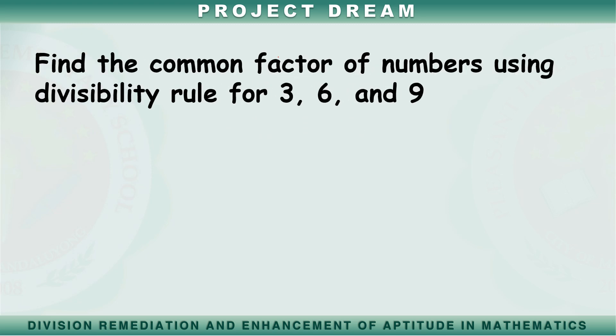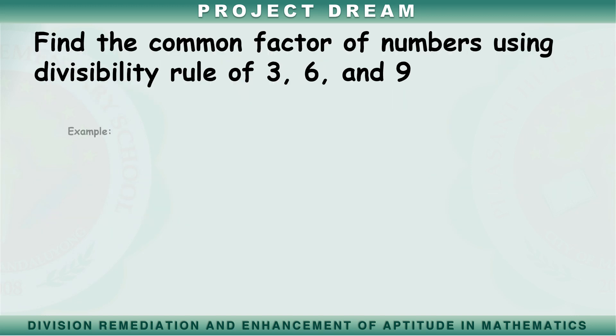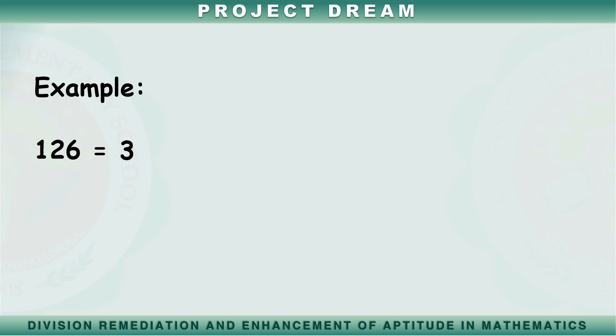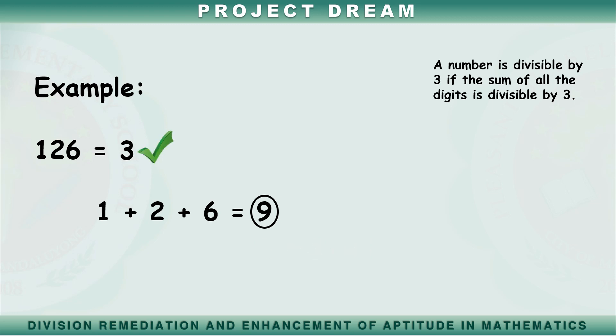We can now find common factors of numbers using the divisibility rules for 3, 6, and 9. What is a common factor? A common factor is a number that is a factor of two different numbers. Let's have an example: 126 and 144. Is 3 a factor of 126? Let's find out using the divisibility rule for 3: 1 plus 2 plus 6 equals 9. The sum of the digits is 9. 9 is divisible by 3, so 3 is a factor of 126.